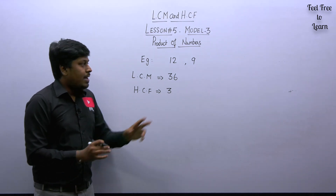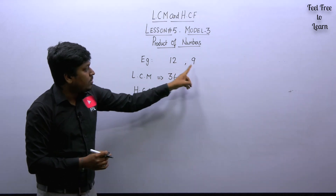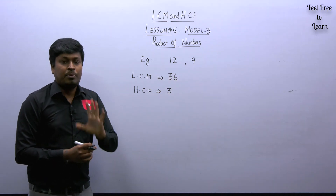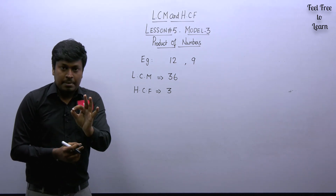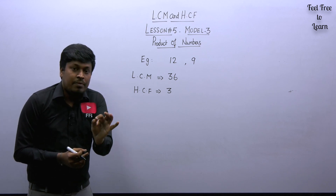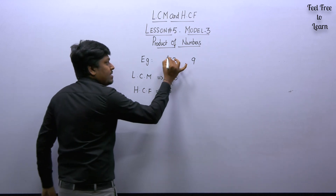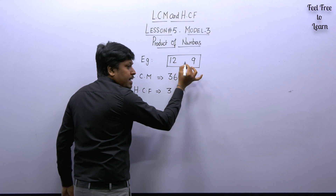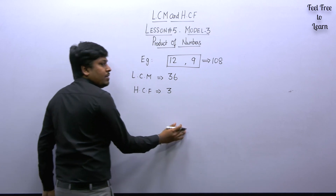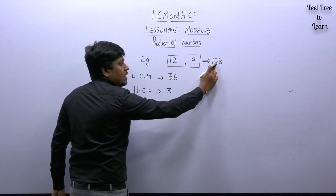Our target was to find LCM and HCF for the two numbers. We found LCM = 36 and HCF = 3. Here is the property: product of two numbers is equal to LCM of the number multiplied by HCF of the number. If you multiply the two given numbers — 12 × 9 — the result is 108.